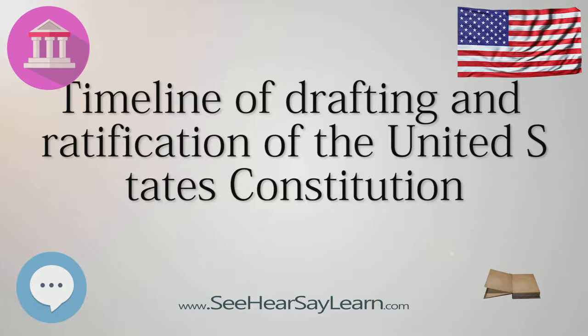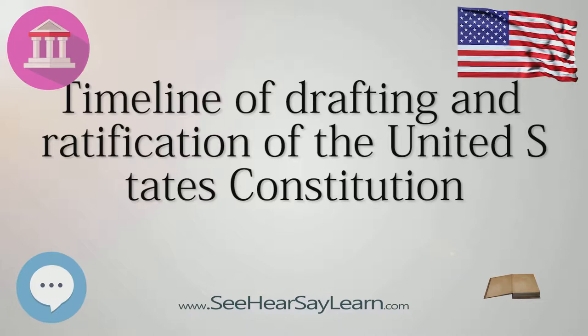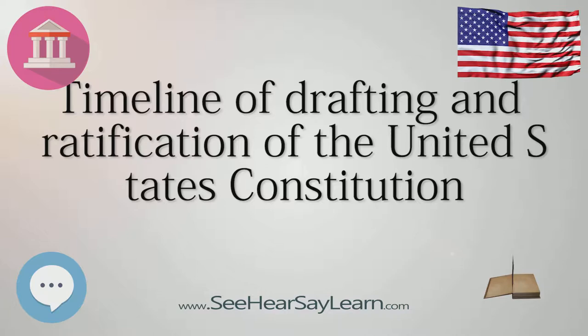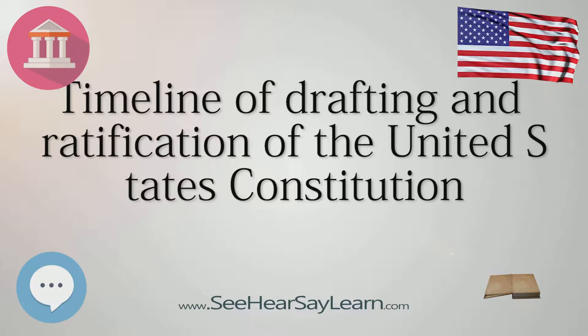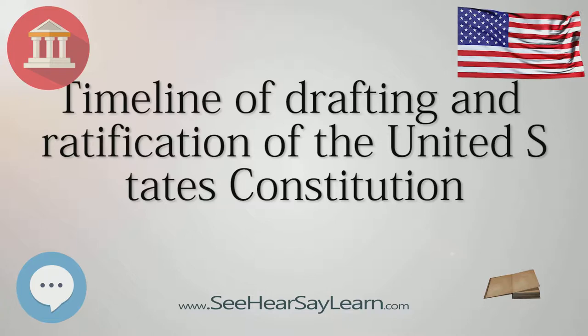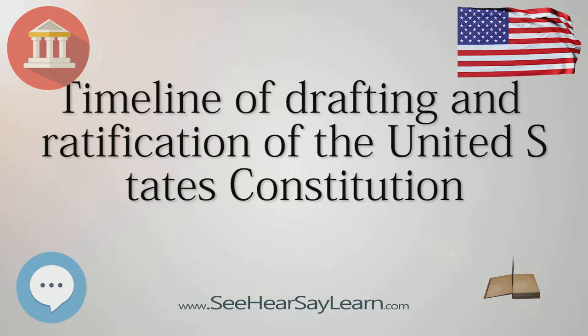The ratification process for the Constitution began that day and ended when the final state, Rhode Island, ratified it on May 29, 1790. In addition to key events during the Constitutional Convention and afterward while the Constitution was before the states for their ratification, this timeline includes important events that occurred during the run-up to the Convention and during the nation's transition from government under the Articles of Confederation to government under the Constitution.